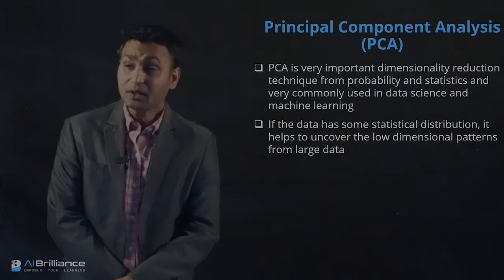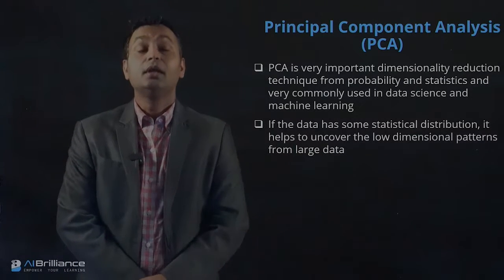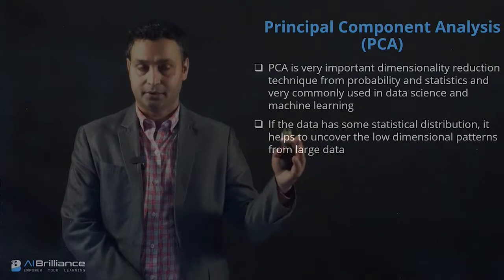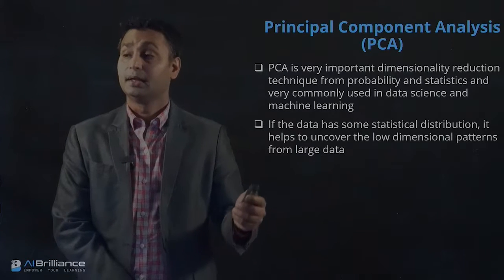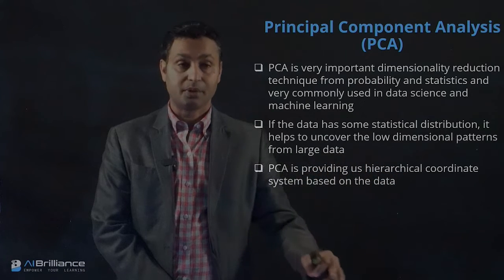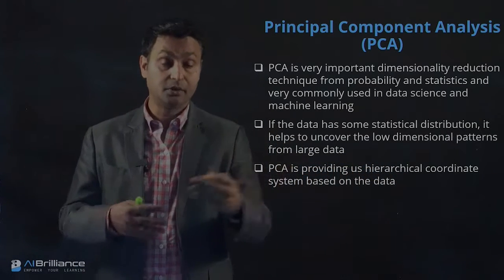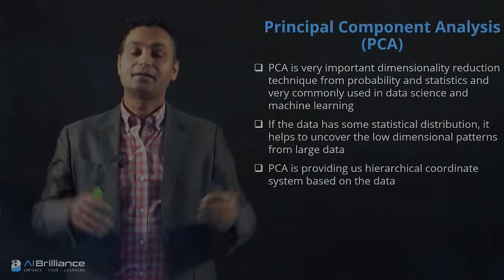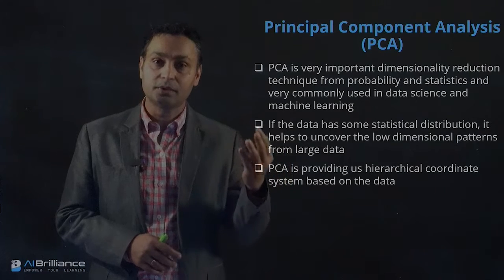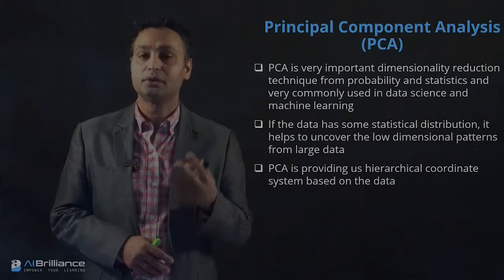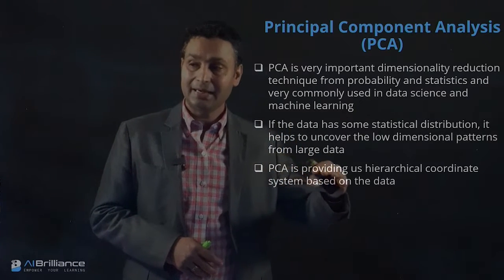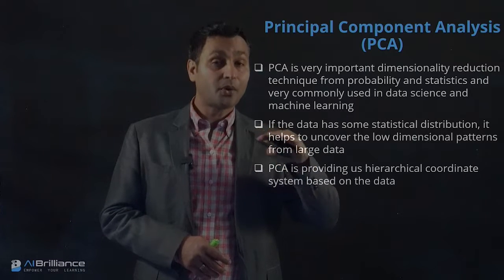If the data has some statistical distribution, PCA helps you uncover the lower-dimensional patterns from large data — that's one of its key features. PCA essentially provides us hierarchical coordinate systems based on the data. If you recall, the U axis was the important axis and the V axis was not, so there is hierarchical information in which coordinate is more important in representing the data.